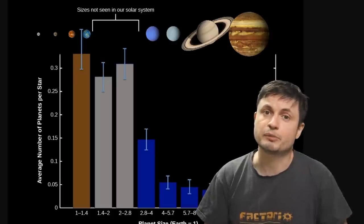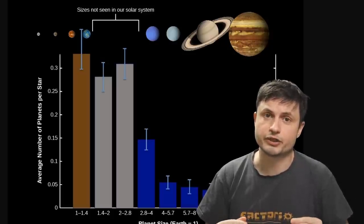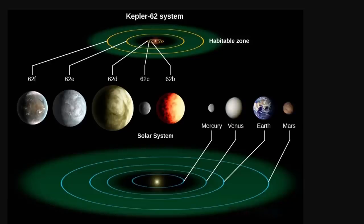And so here is an example from Kepler-62, with one potentially terrestrial planet, but the rest being either super-Earths or possibly mini-Neptunes.